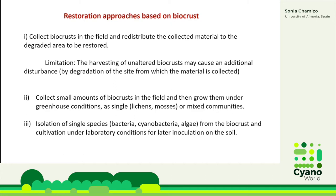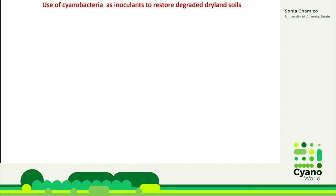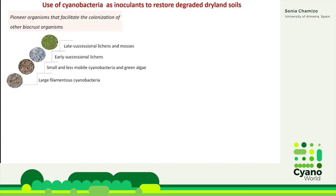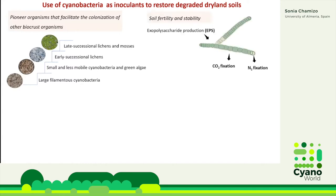This is the approach that we are investigating now — we are using cyanobacteria to restore degraded soils. Why are we interested in cyanobacteria as inoculants for restoration? One reason is because cyanobacteria are the first colonizers of terrestrial ecosystems and they are the pioneer organisms that facilitate and improve conditions for the colonization and establishment of other biocrust organisms such as lichens and mosses. Another reason is that they fix atmospheric CO2, and some species are also able to fix atmospheric nitrogen, thus increasing soil fertility.